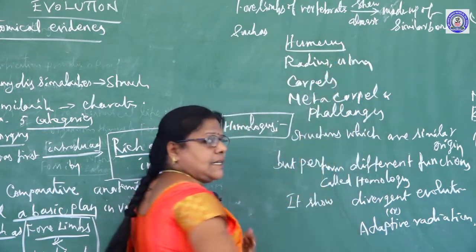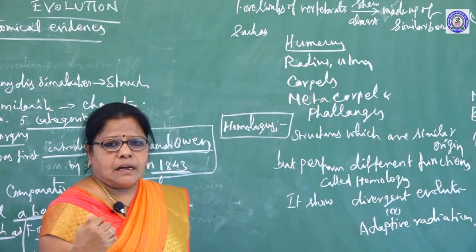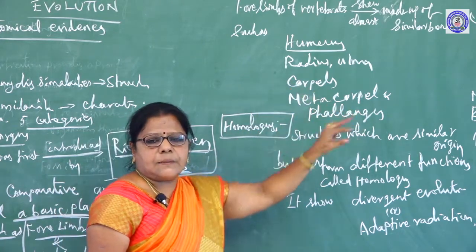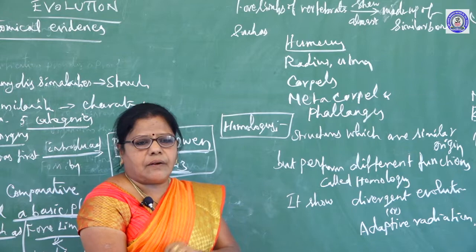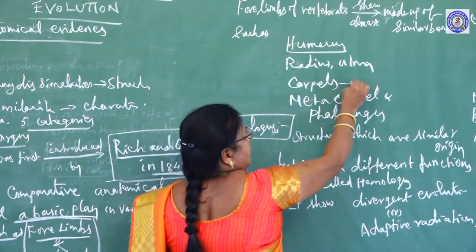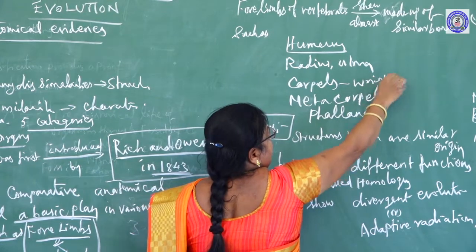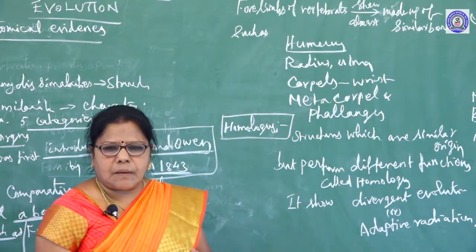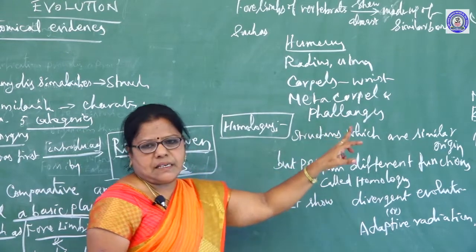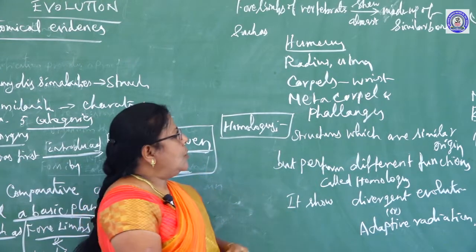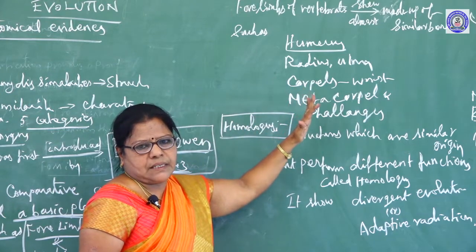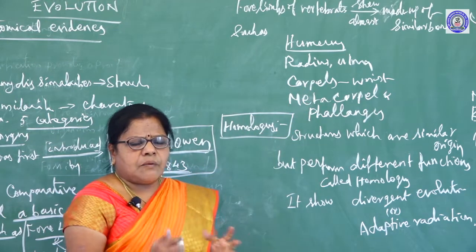The humerus bone is present in our upper arm. Radius and ulna are present in the lower arm. Carpals are present in the wrist part, metacarpals are present in the palm region, and phalanges are present in the fingers.